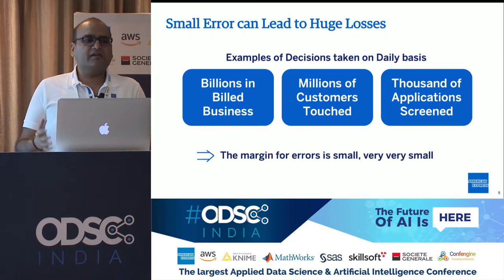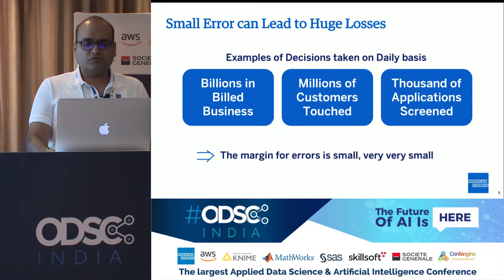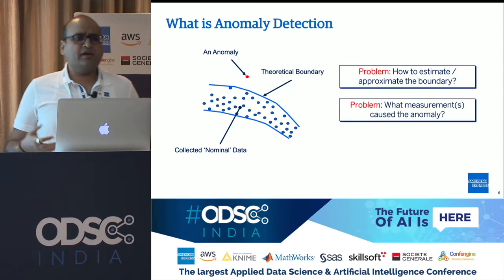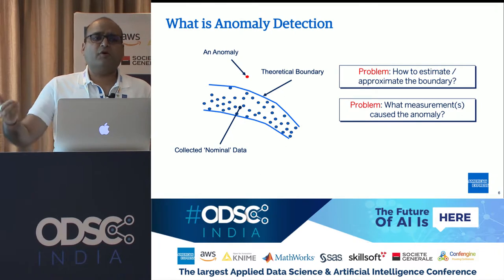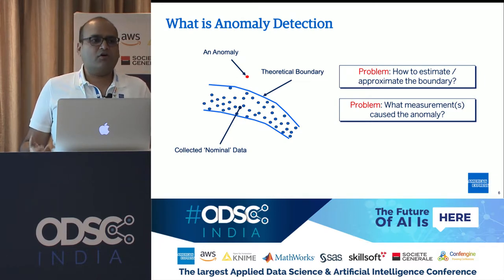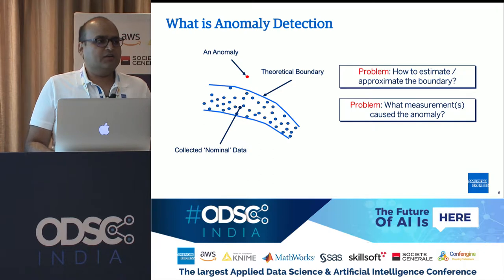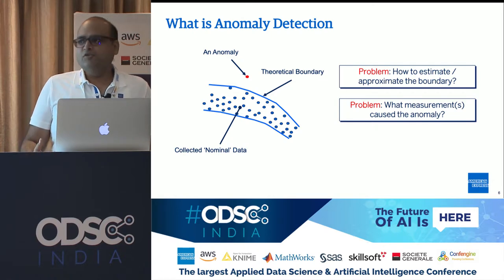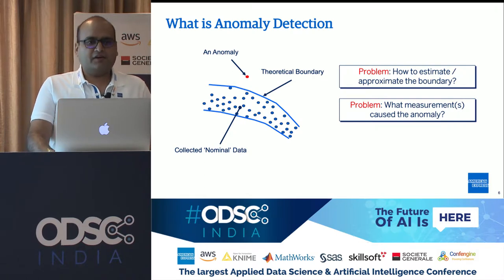Overall, the margin for error is very small. Coming to the problem — why is anomaly detection a complex problem to solve? Anomaly detection is about defining boundaries around your data: anything outside the boundary is an anomaly, anything within is clean data. The challenge is where to define the boundary, because there is no right or wrong answer. If you define it too tight, you end up with a lot of noise and too many alerts. If you make it too relaxed, you lose the real problem. Let me exemplify this with an interesting example.